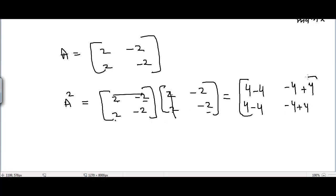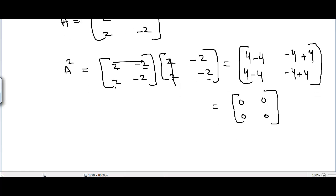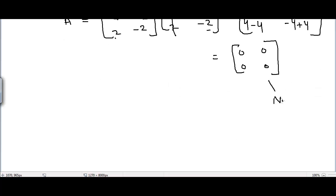We get 4 - 4 = 0, -4 + 4 = 0, and we also get zero and zero. We get a 2×2 resultant matrix and it's a null matrix. Therefore, we can say that A is nilpotent.